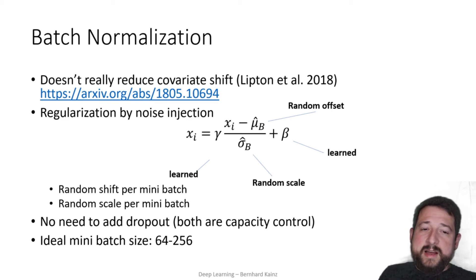This is one of the reasons why if you use batch normalization, you really don't need dropout in the same network. They kind of do the similar thing in terms of capacity control. This is also the reason why batch norm is quite sensitive to the actual mini batch size.